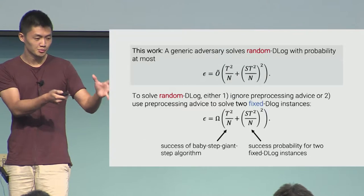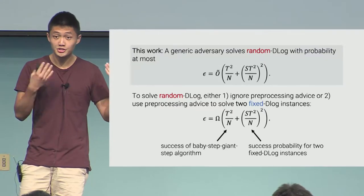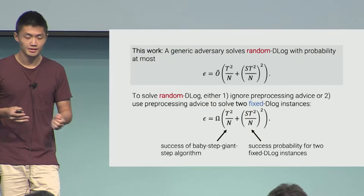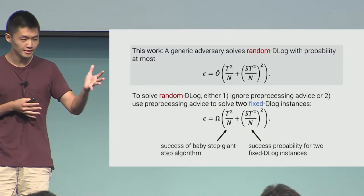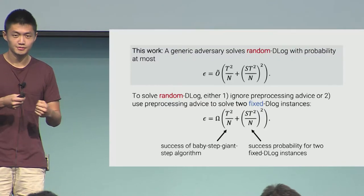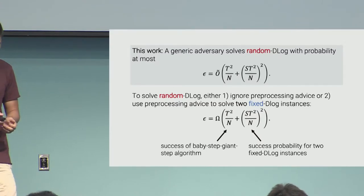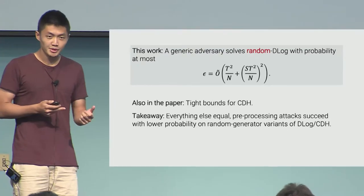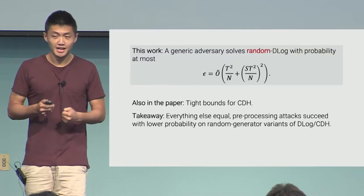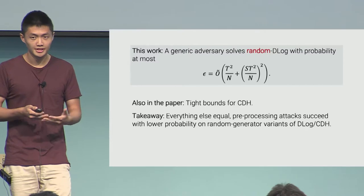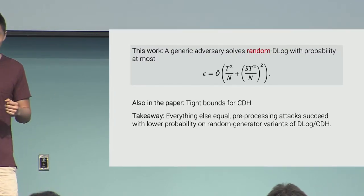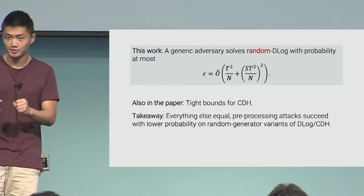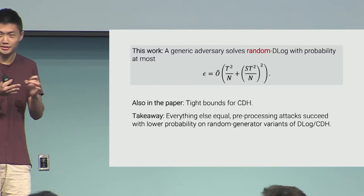In this work, we close this gap by giving a matching bound showing that a generic adversary solves random-generator discrete log with probability at most t² / n + s²t⁴ / n². The techniques we use come from the pre-sampling techniques of Coretti, Dodis, and Guo developed over the past two years. We have analogous type bounds for CDH. The takeaway is that pre-processing attacks don't do quite as well in the random-generator setting — intuitively because pre-processing is taking advantage of the fact that you're always solving discrete log with respect to the same generator, and once you make that generator random, your success probability drops. This is spiritually similar to salting.